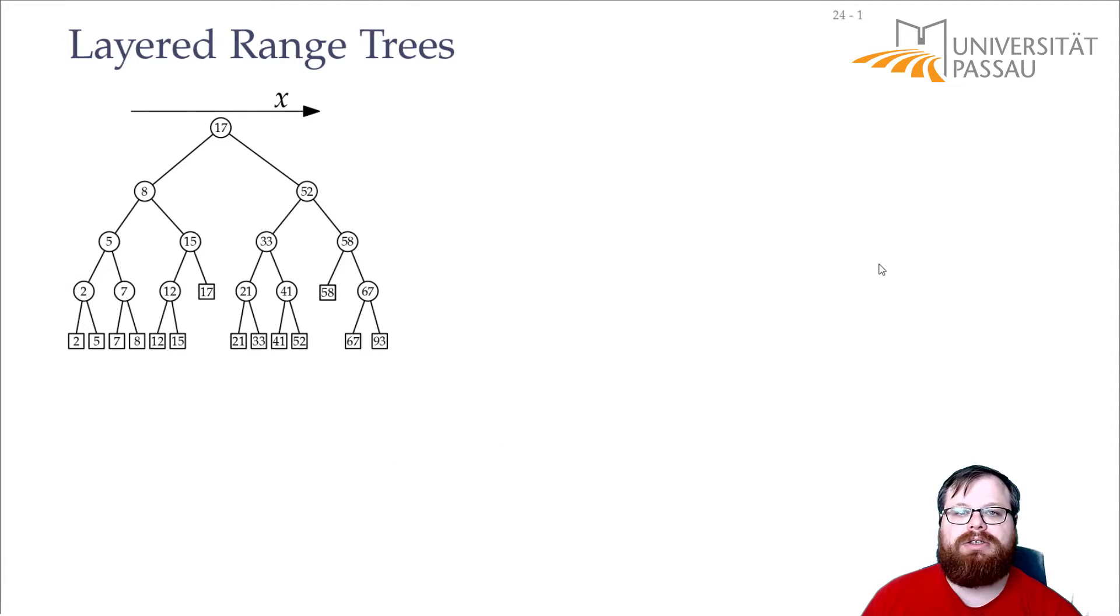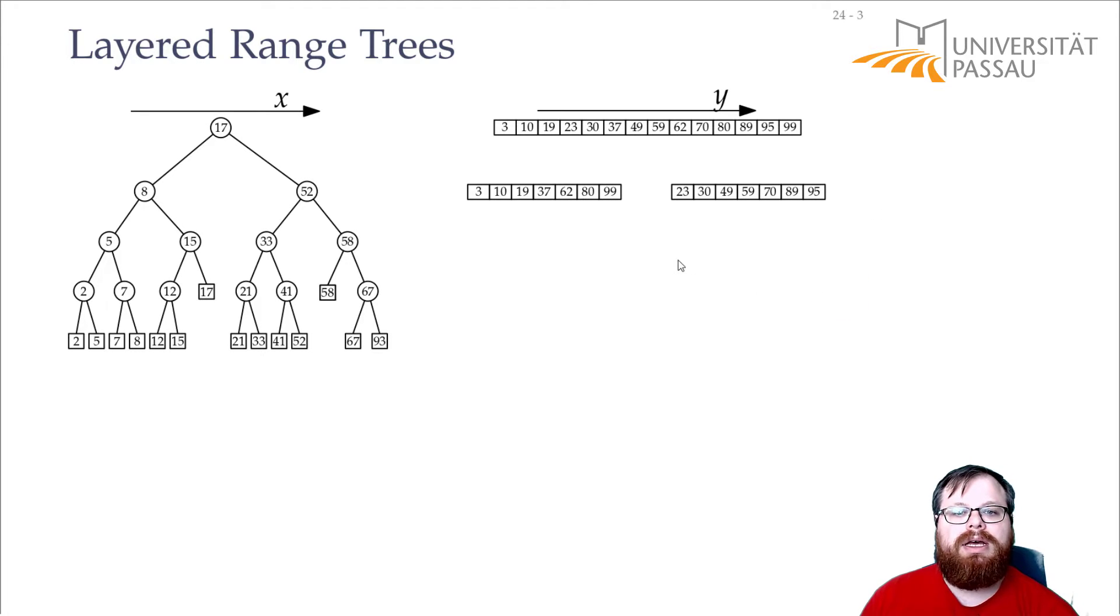So, we still have our binary search tree for the x-coordinates. But instead of storing a second-level binary search tree for the y-coordinates, we use this concept here to store everything in arrays. So, we take one array that contains all the points sorted by y-coordinate. And now, here we split it into two subsets. So, we take all these points, store them again in sorted arrays in the second level.